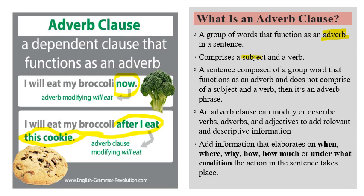An adverb clause has a subject and a verb. Sometimes a group of words functions as an adverb but does not have a subject and a verb — in that case it is called an adverb phrase, not an adverb clause. These adverb clauses modify or describe verbs, adverbs, and adjectives, adding relevant or descriptive information — such as when something happened, where, why, how, how much, and under what condition.